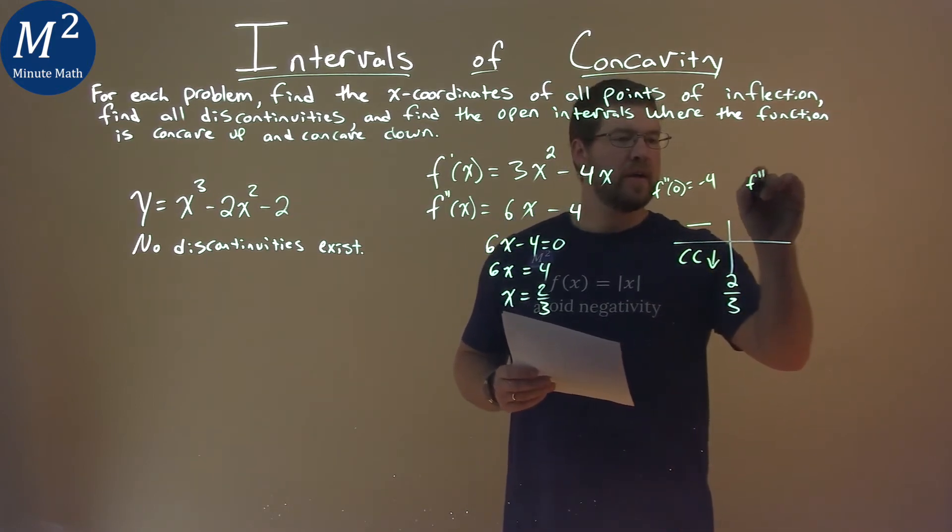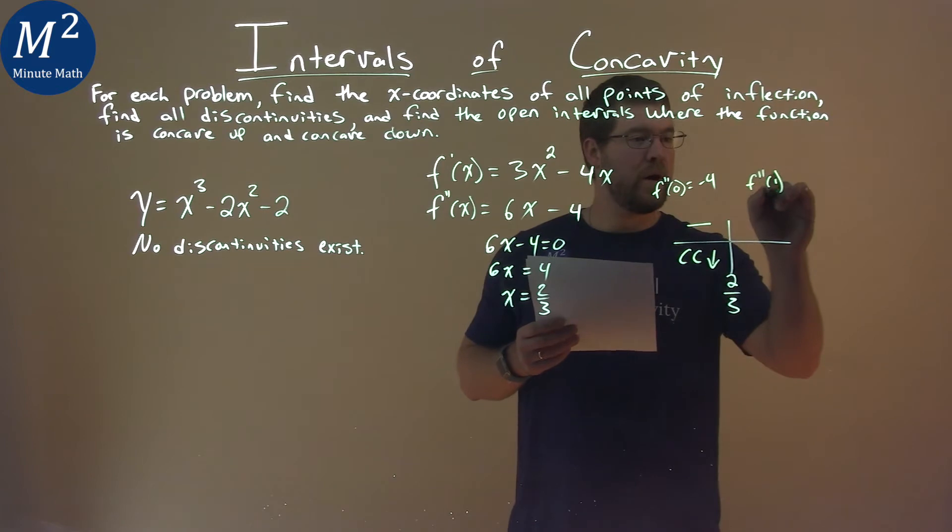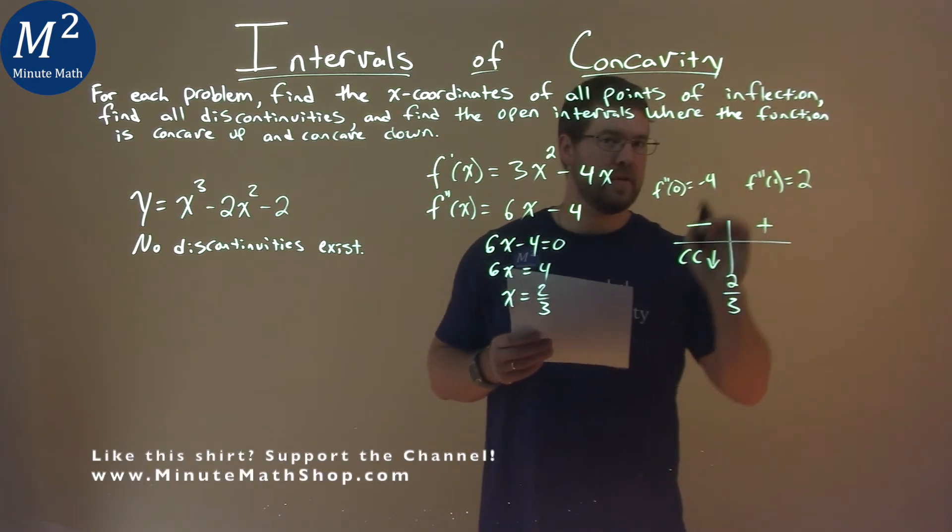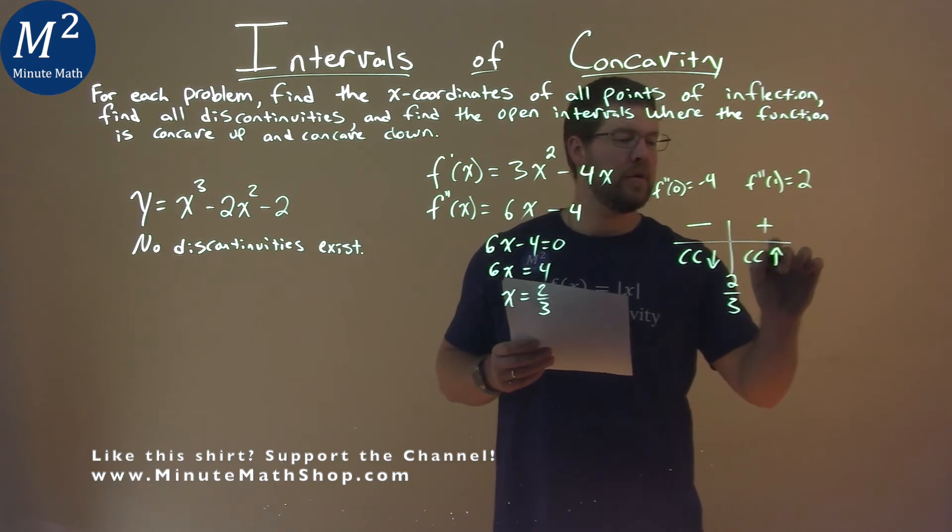I take my second derivative again, plug in a value greater than 2/3—I picked 1—and that came out to be positive 2. It's positive, that's all I care about, and that means it's concave up.